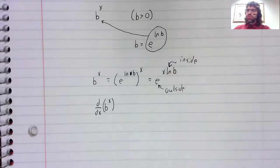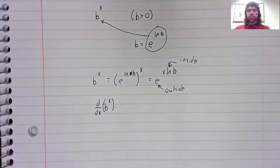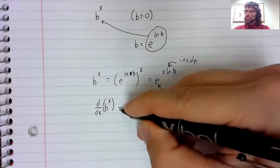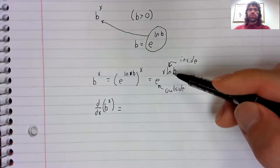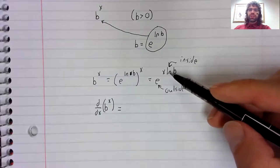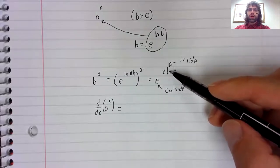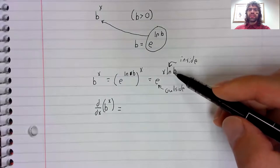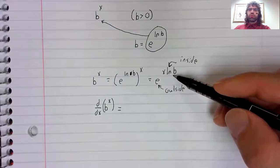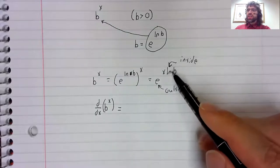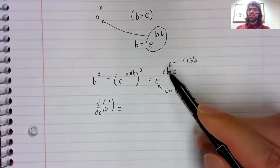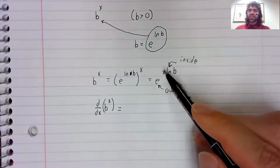There's our inside function. Here's our outside function. Don't get confused or tricked into thinking that this is more complicated than it is. The natural logarithm of b is a constant. So, this is just a constant times x.